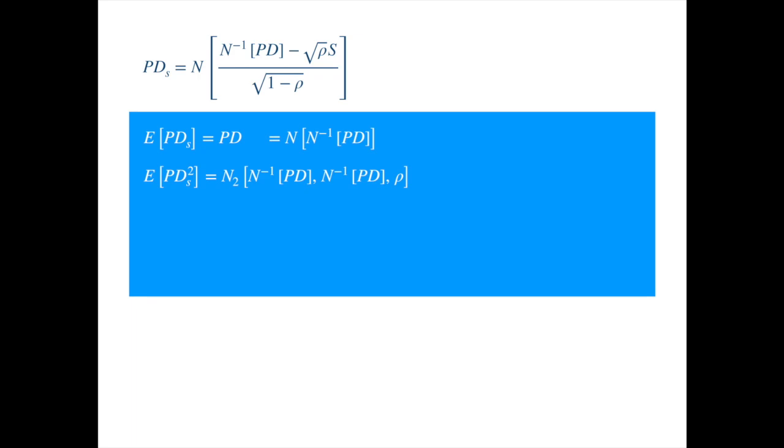Where N2 represents the bivariate normal. You may view this as the joint default probability of two names. Now we can easily derive the variance formula. By the definition of variance we have, substituting for the moments we get.